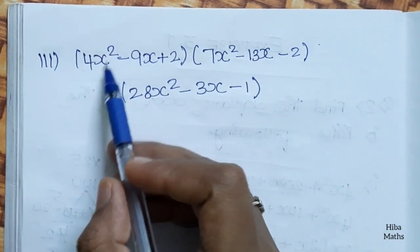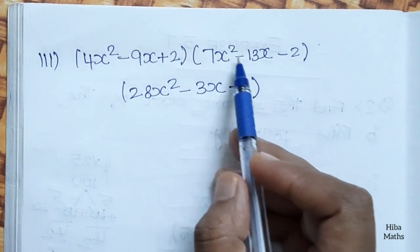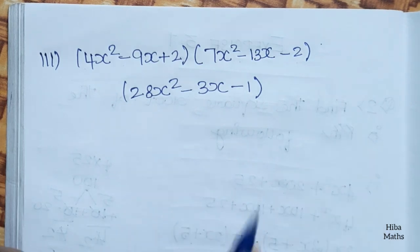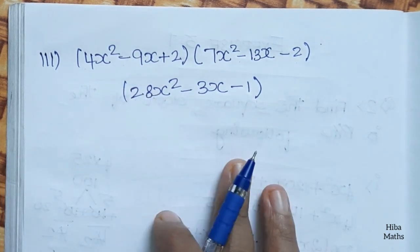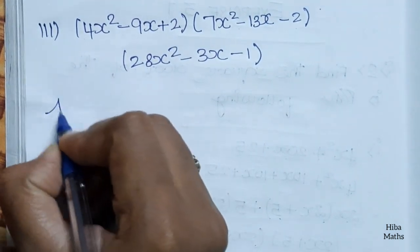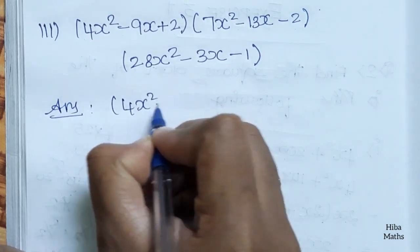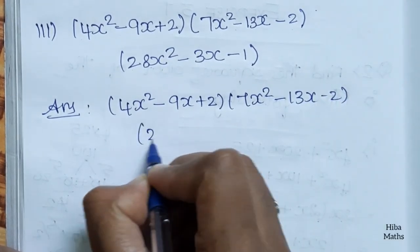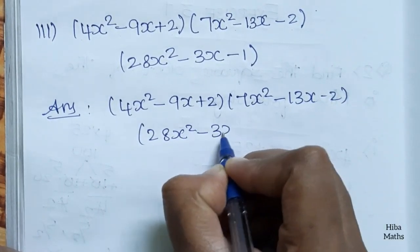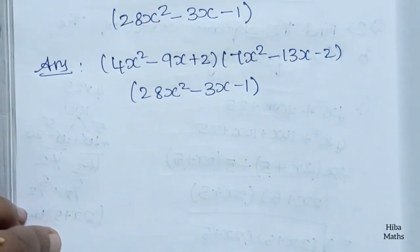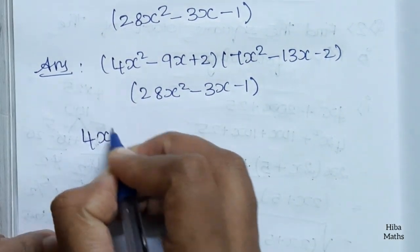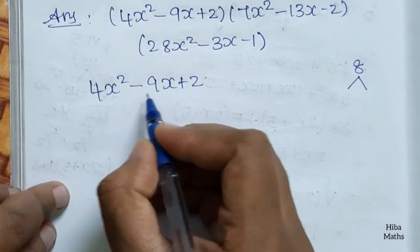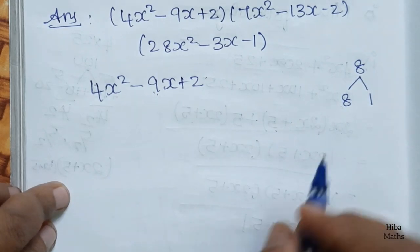Third question. We have three expressions: 4x² minus 9x plus 2, then 7x² minus 13x minus 2, and 28x² minus 3x minus 1. We have to factorize and find the square root. For 4x² minus 9x plus 2: multiply 4 times 2 equals 8. We need to split minus 9 as minus 8 minus 1, since 8 plus 1 is 9.